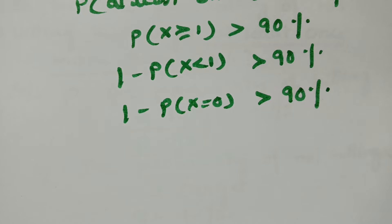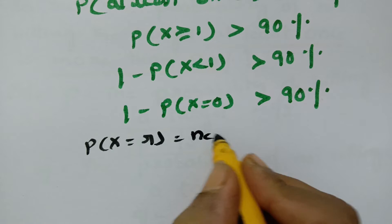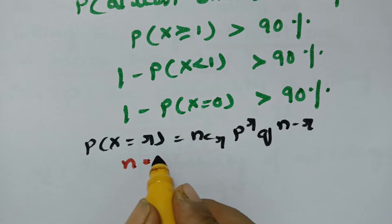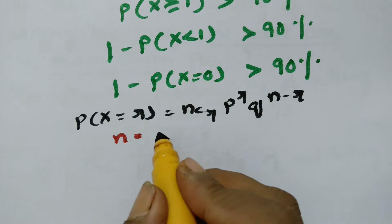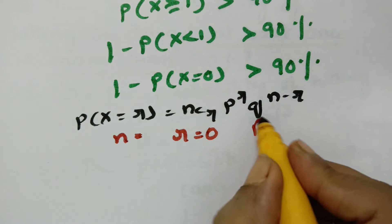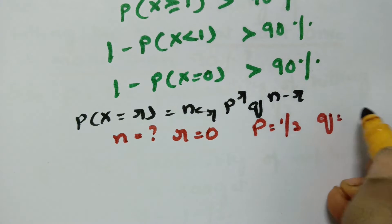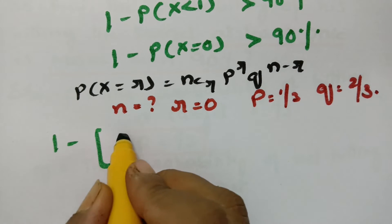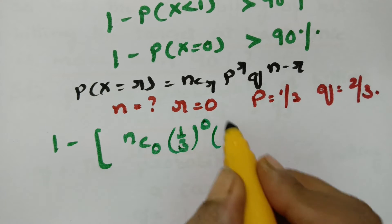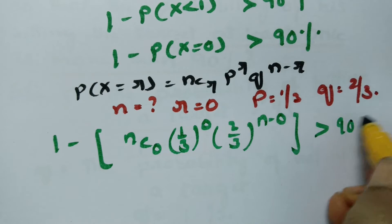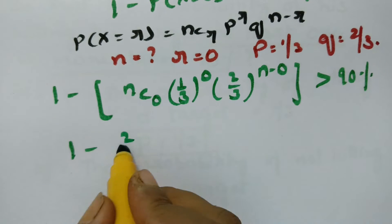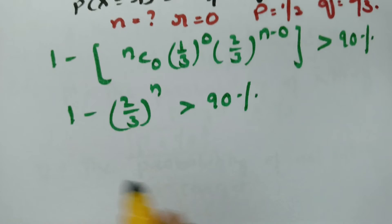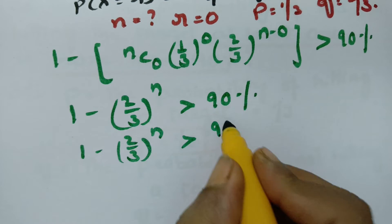According to the binomial distribution formula: P(X=R) = NCR × P^R × Q^(N−R). Here n is what we need to find, r=0, P=1/3, Q=2/3. Substituting: NC0 × (1/3)^0 × (2/3)^n is greater than 90%. NC0 is 1, (1/3)^0 is 1, so this becomes 1 minus (2/3)^n greater than 90/100, which means (2/3)^n is less than 0.1.